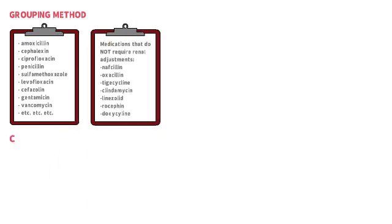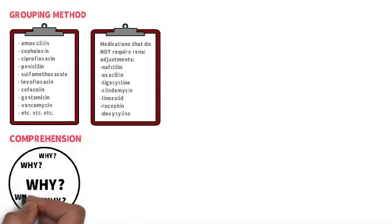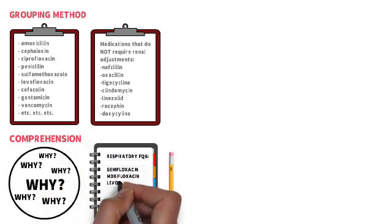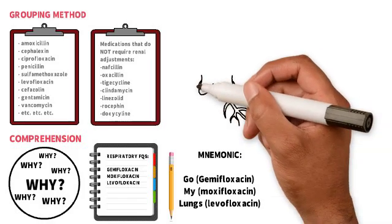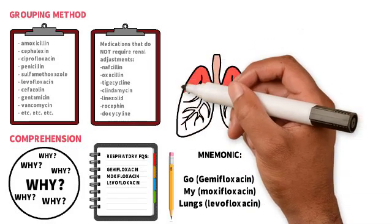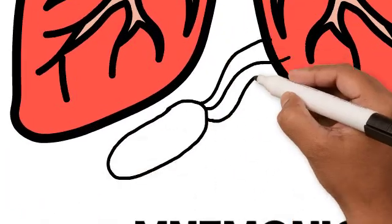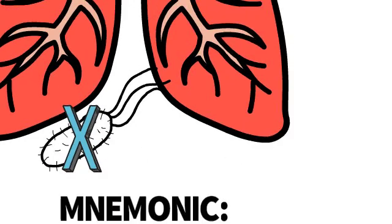Next is comprehension. Like I said before, understanding is always best for long-term retention. For example, the respiratory fluoroquinolones are gemifloxacin, moxifloxacin, and levofloxacin. Think about the mnemonic, go my lungs, to help you remember this. There is a common misconception that ciprofloxacin has poor lung penetration because it isn't considered a respiratory fluoroquinolone, when the actual reason is that it lacks activity against streptococcus pneumoniae, a common bacteria that causes pneumonia.